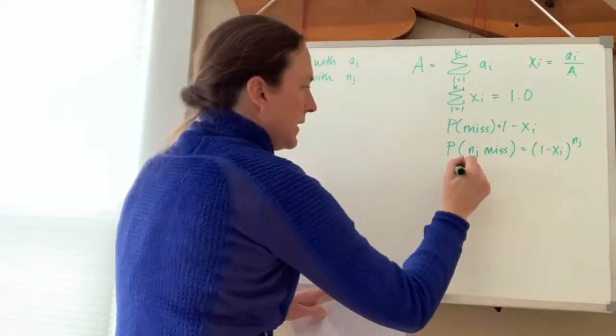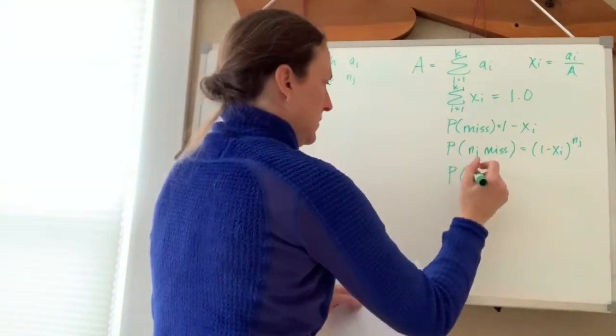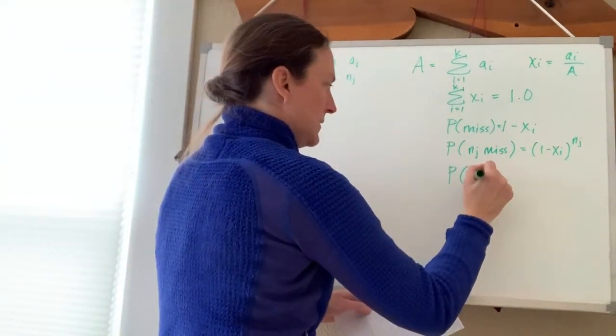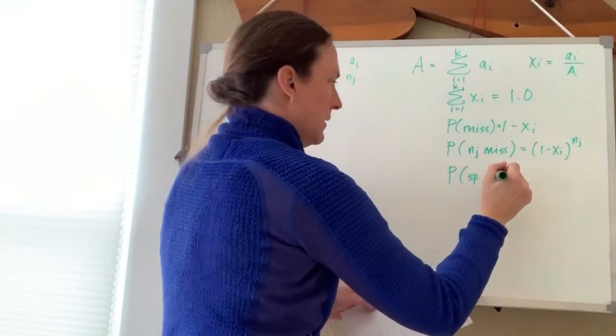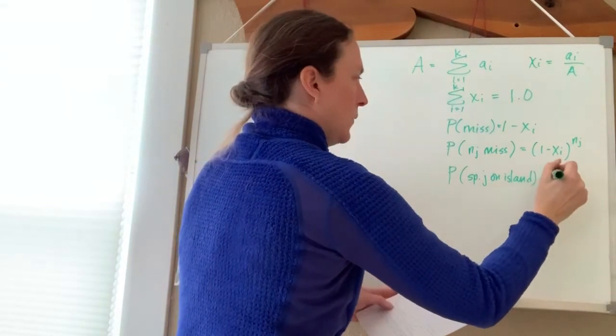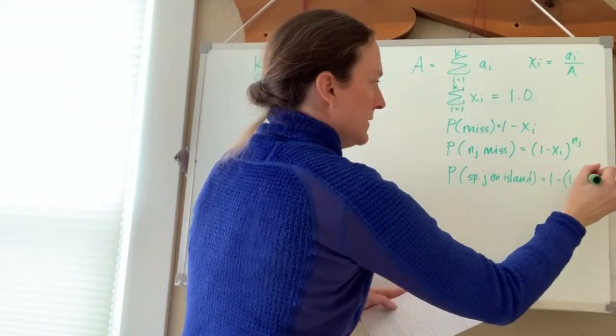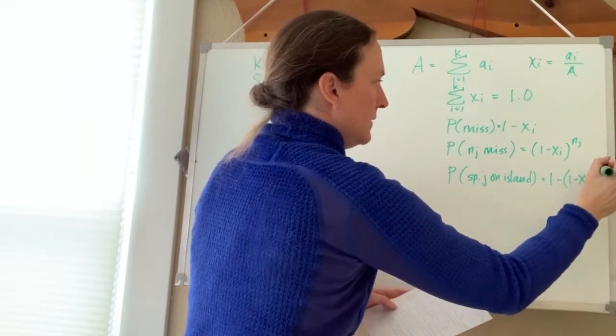And the probability that at least one individual makes it, so the probability that we get species j on the island, would equal 1 minus that value: 1 minus (1 minus x_i)^(n_j).